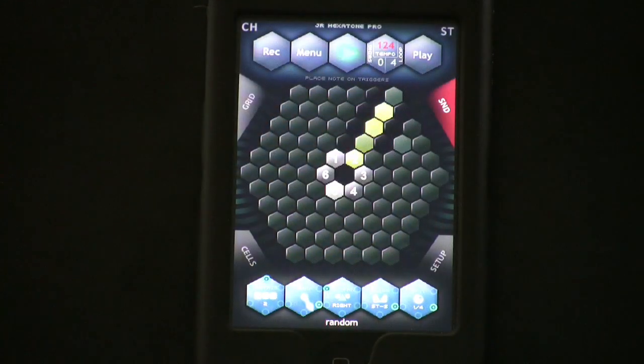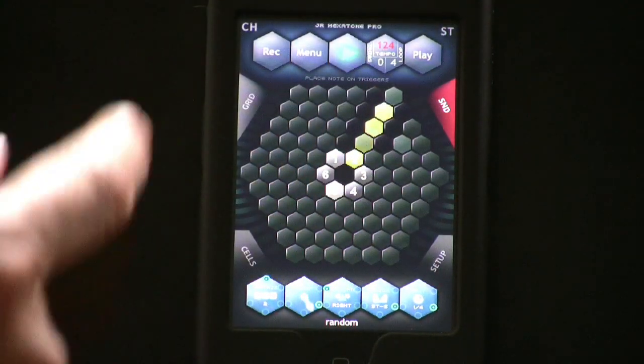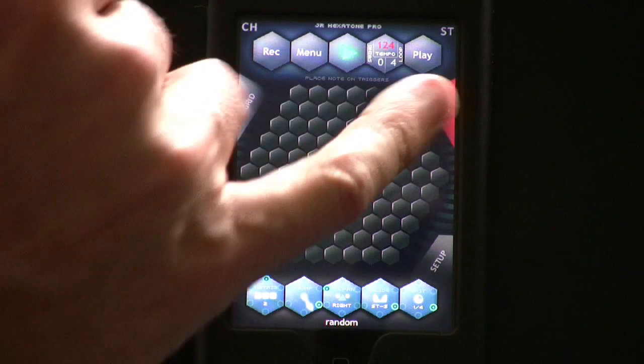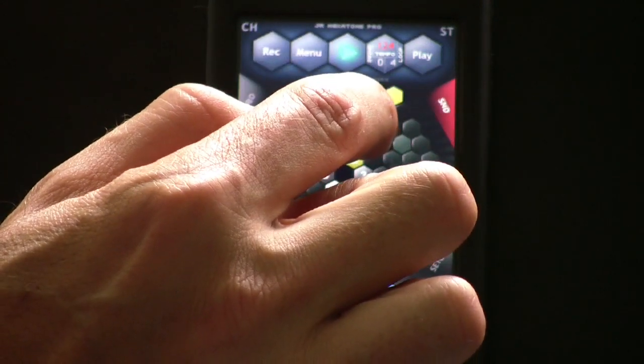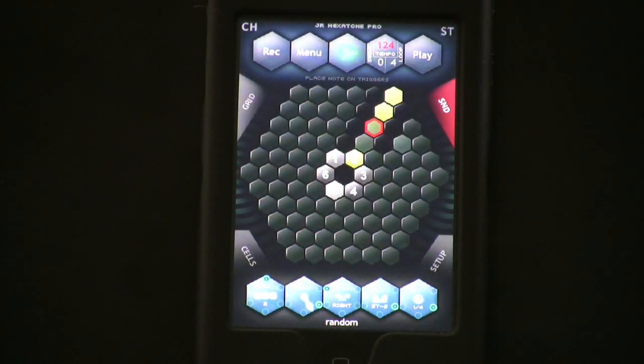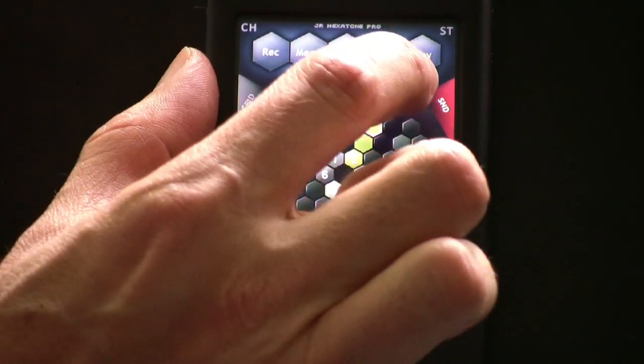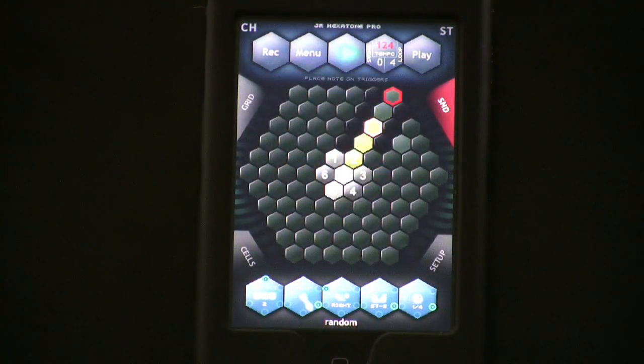So let's go back to the sound button and hit that. Now to hear sound what I need to do is with that pressed I can press on one of the cells and that will begin to trigger a sample on that cell. Let's put a cell there, a cell there and maybe one more here.